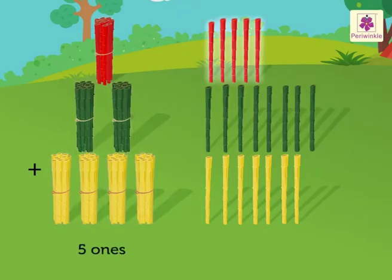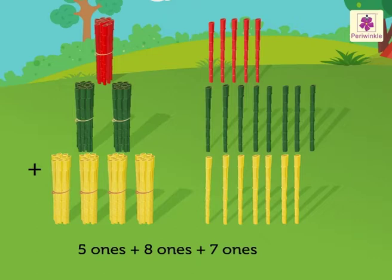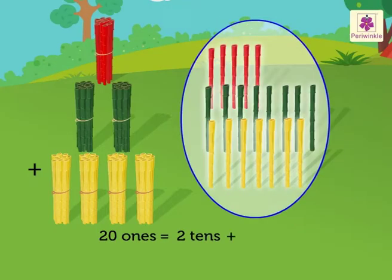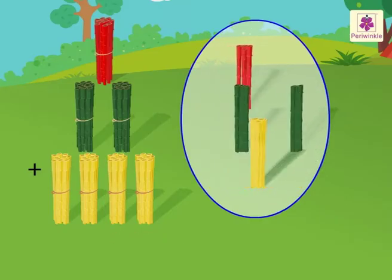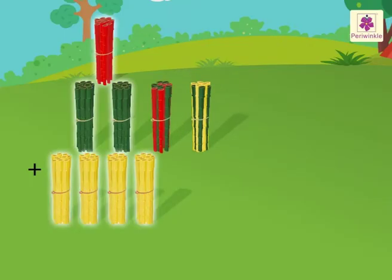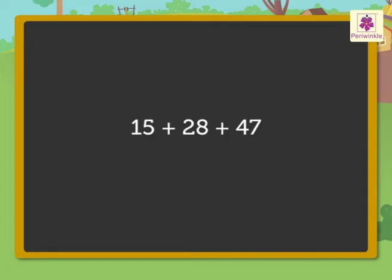Five ones plus eight ones plus seven ones is equal to twenty ones. Now, twenty ones is equal to two tens and zero ones, so we regroup it — that is, we take the two tens bamboo sticks and place them with the other tens. Now count the ones and the tens: we have nine tens and zero ones, which is equal to ninety.